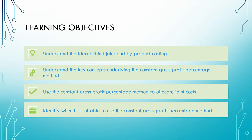As with all our previous videos, we will begin by revising the basic idea behind joint and by-product costing. We will then understand the key ideas behind the constant gross profit percentage method, look at a practical example allocating joint costs using this method, and then consider its advantages and disadvantages and when it is suitable.